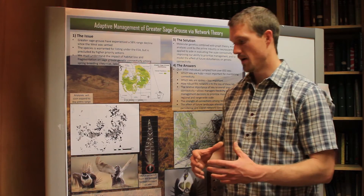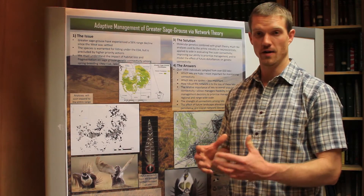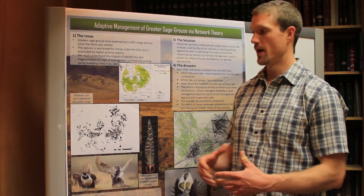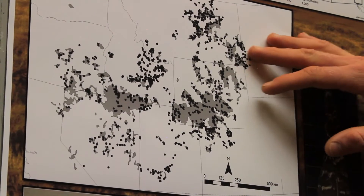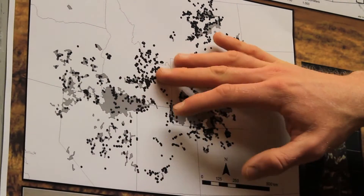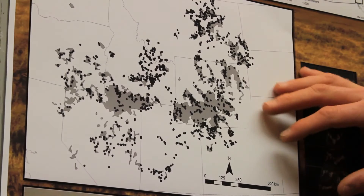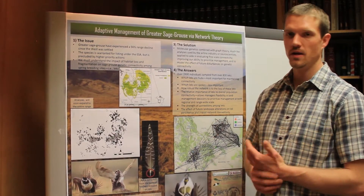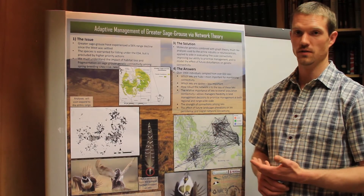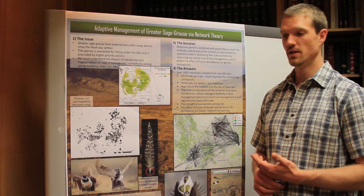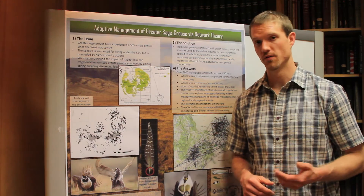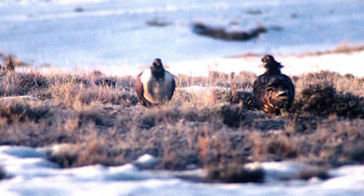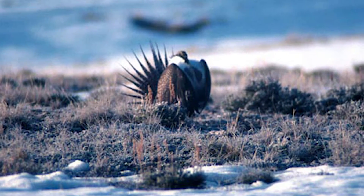You can take those analyses anywhere from the lek level — figuring out what birds are there and how related they are — but then we can scale up to a much more massive range-wide research effort across 11 western states where the bird is currently distributed. We're using some really cool approaches to prioritize sage-grouse populations for management, so that when managers need to make a decision about where to put conservation dollars on the landscape, they can point to specific locations and say, this is where we're going to invest our resources.